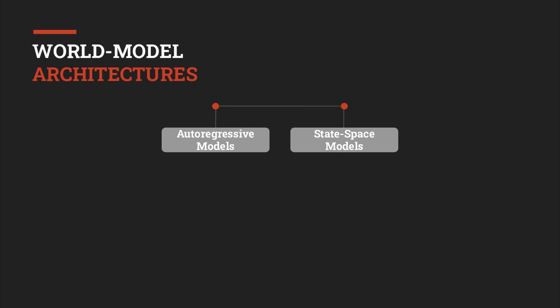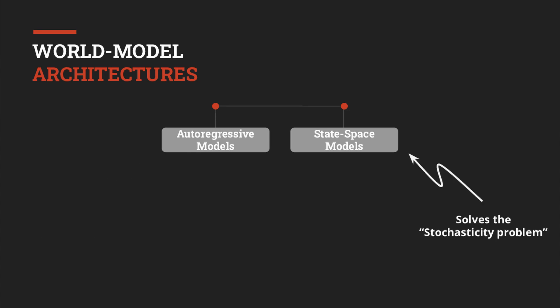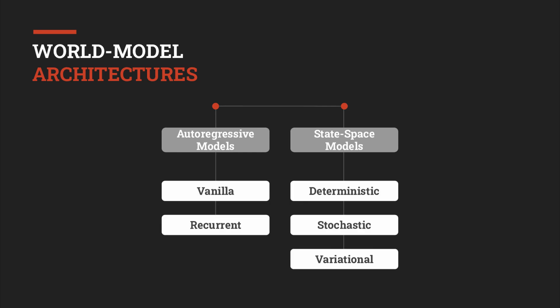The main categories for world model architectures are just two: autoregressive models and state-space models. Autoregressive models are well known and they are a great tool for addressing a partial observable environment. State-space models, on the other hand, are less known but nonetheless are extremely important sequential architectures that model uncertainty.